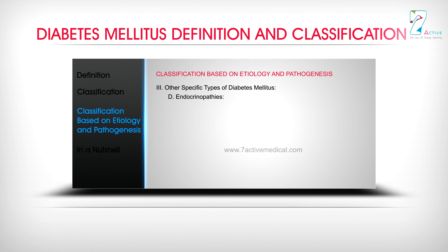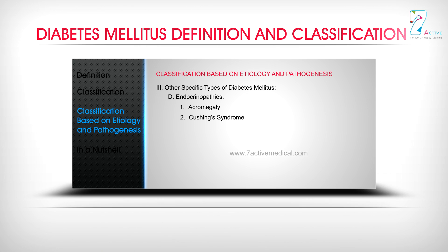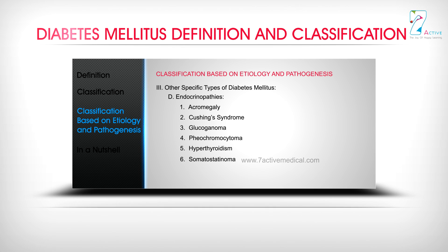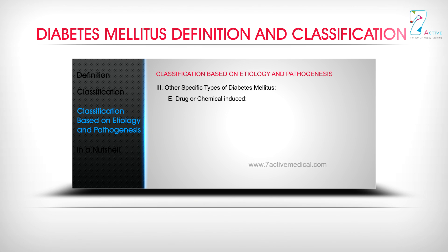D. Endocrinopathies: 1. Acromegaly; 2. Cushing's syndrome; 3. Glucagonoma; 4. Pheochromocytoma; 5. Hyperthyroidism; 6. Somatostatinoma; 7. Aldosteronoma; 8. Others.